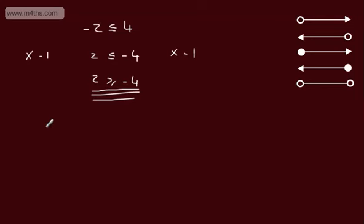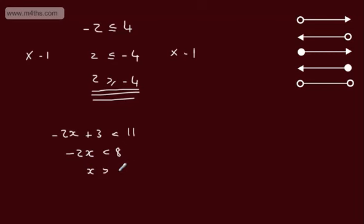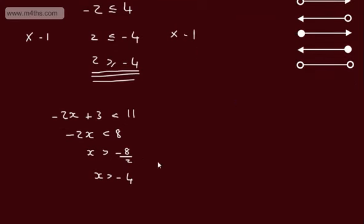Let's look at an example. We've got minus 2x plus 3 is strictly less than 11. Subtract 3 from both sides: minus 2x is strictly less than 8. Now divide both sides by minus 2 — we need to swap the sign around — giving minus 8 over 2, so x is strictly greater than minus 4. We check by substituting 0: 0 plus 3 is less than 11, clearly it is, so we have the correct region. We locate minus 4 on the number line and shade to the right with an open dot.